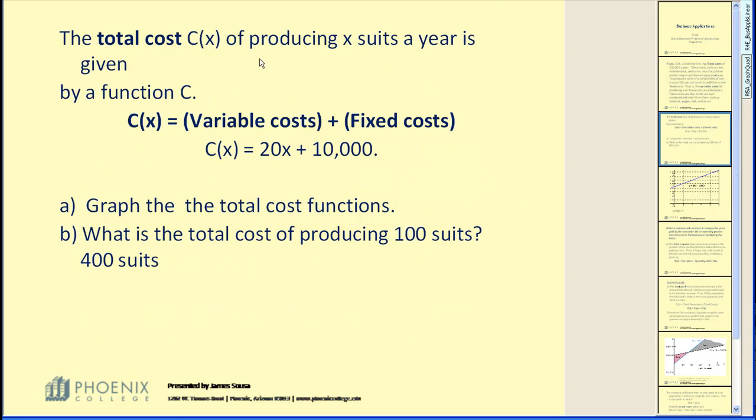The total cost, C(x), of producing X units a year is given by the function C. C(x) equals the variable cost, which is 20X, plus the fixed cost, equal to $10,000. So our cost function is 20X plus $10,000. Graph the cost function, and then what is the total cost of producing 100 suits and 400 suits?